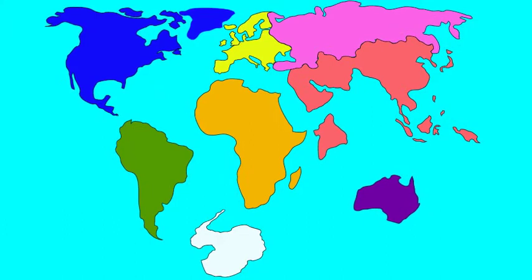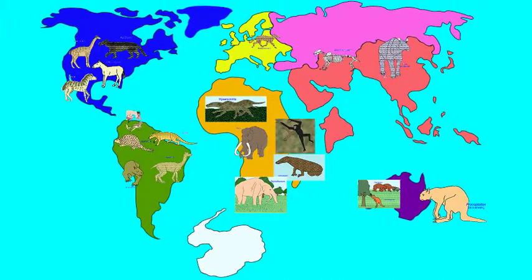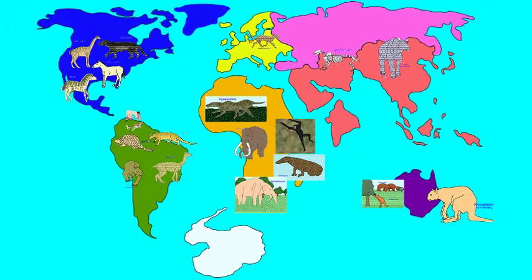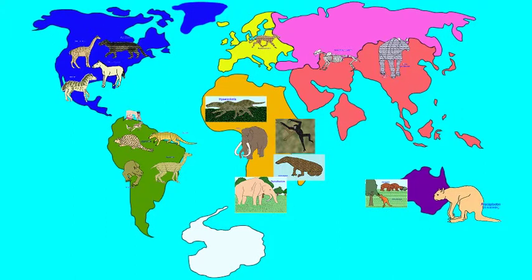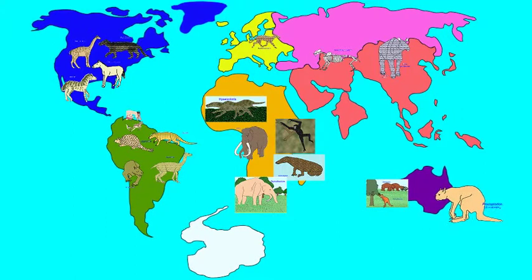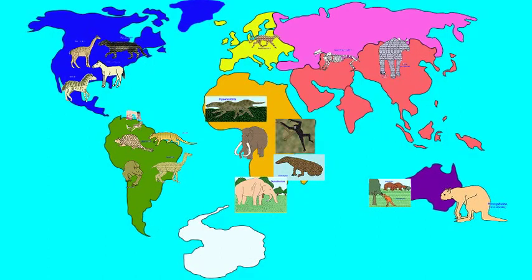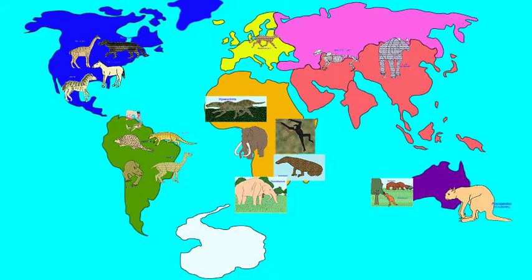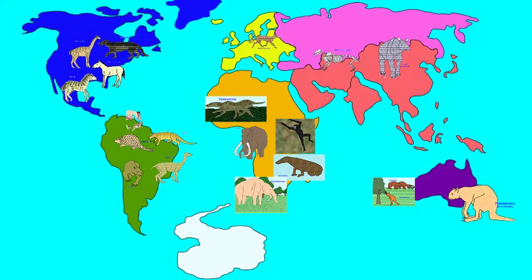Thus, we see that many of the groups of organisms found on these continents during the time from the late Cretaceous through the Miocene and Pliocene would be endemic to certain continents — found only in South America, or found only in Africa — because of the isolation of these continents.